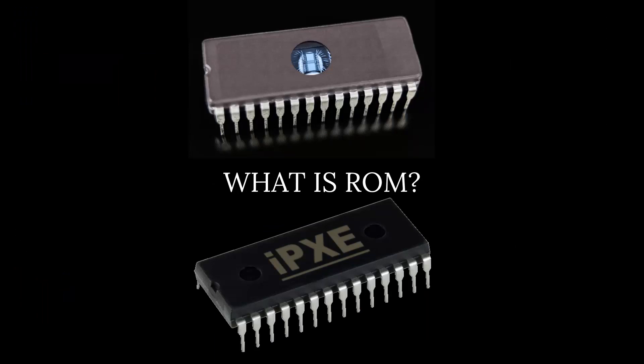ROM is a memory device or storage medium that stores information permanently. It is also a primary memory unit of a computer, along with the random access memory, RAM. It is called read-only memory as we can only read the program and data stored on it, but cannot write on it. It is restricted to reading words that are permanently stored within the unit. The manufacturer fills the programs into the ROM at the time of manufacturing. After this, the content of the ROM can't be altered, which means you can't reprogram, rewrite, or erase its content later. However, there are some types of ROM where you can modify the data.